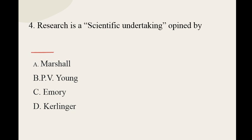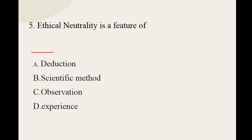Question number four: Research is a scientific undertaking — defined by whom? The options are Marshall, P.V.N., Emory, and Kerlinger. The correct option for question number four is P.V.N. Question number five: Ethical neutrality is a feature of — options are deduction, scientific method, observation, and experience. The correct option for question number five is scientific method.